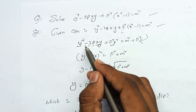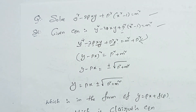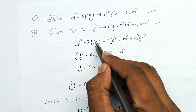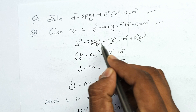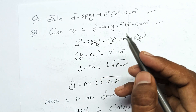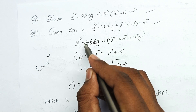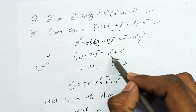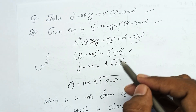Using the formula a squared minus 2ab plus b squared, we can take this as a perfect square. So y minus px equals square root of p squared plus m squared.